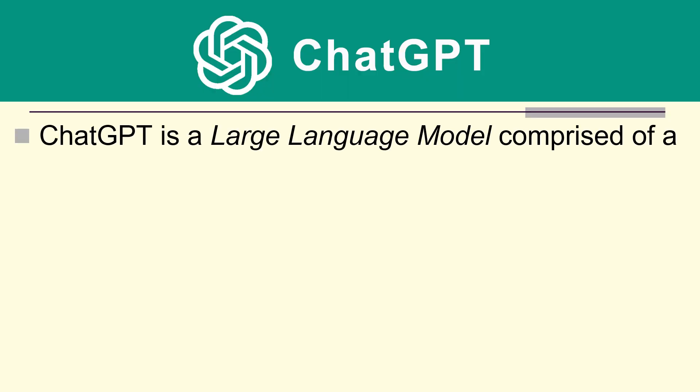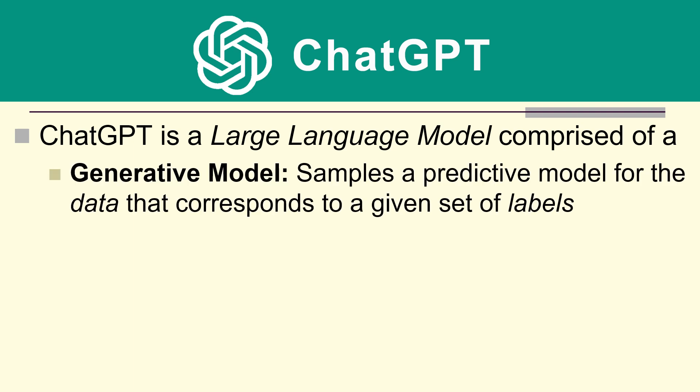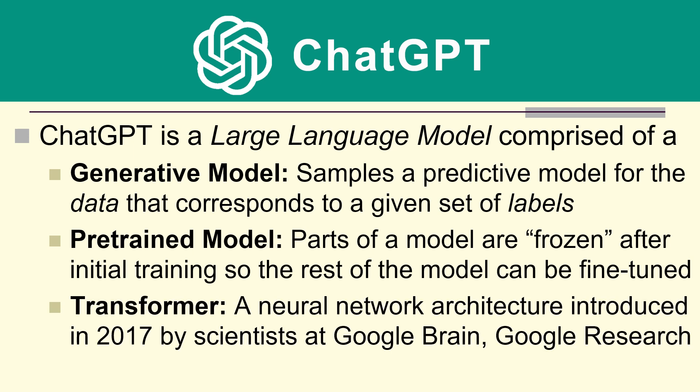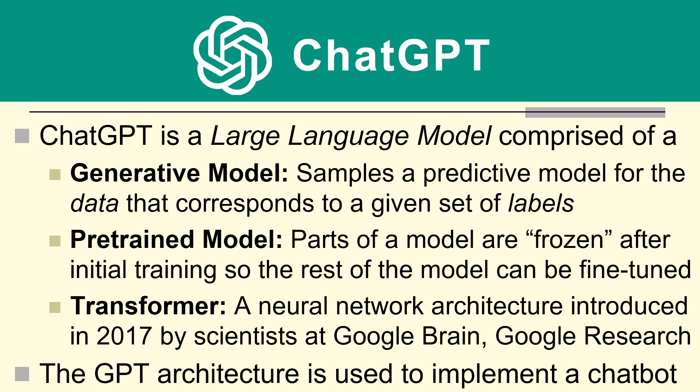For example, one model in particular is all the rage these days: ChatGPT. ChatGPT is a large language model comprised of a generative model that samples a predictive model for the data that corresponds to a given set of labels. It's a pre-trained model - parts of the model are frozen after initial training so the rest of the model can be fine-tuned. And it's a transformer, a neural network architecture introduced in 2017 by Google Brain and Google Research.